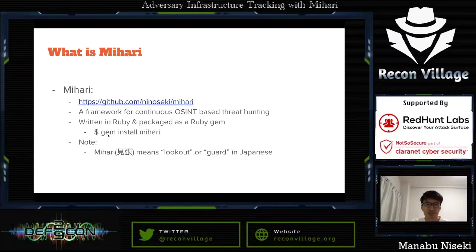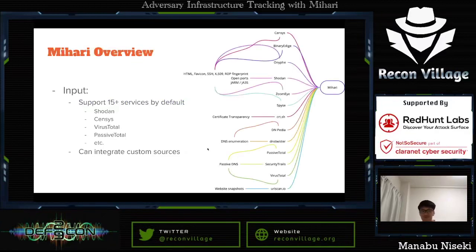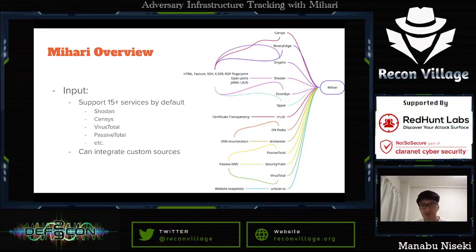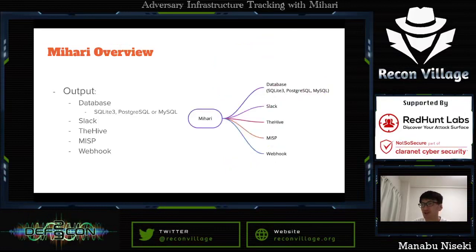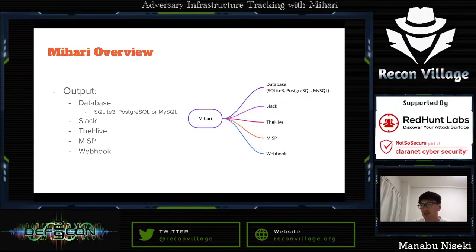Just execute the command 'gem install mihari'. Note that 'mihari' means 'lookout' or 'guard' in Japanese. Mihari can get input from over 15 services by default — for example, Shodan, Censys, VirusTotal, PassiveTotal, and so on — and it can also integrate custom sources. Mihari can output findings to a database, Slack, TheHive, MISP, and general webhooks, so you can get a notification when there is a new finding matching a search query.